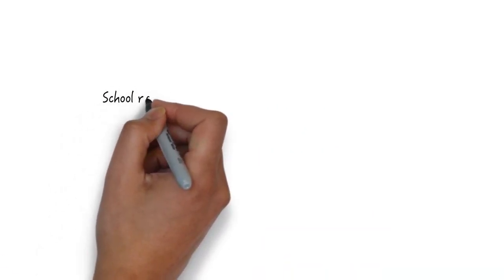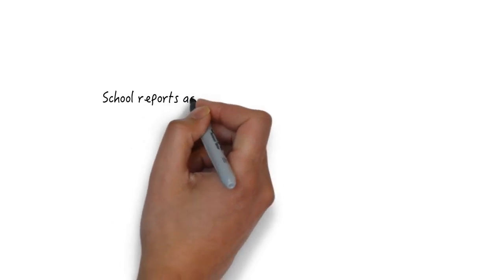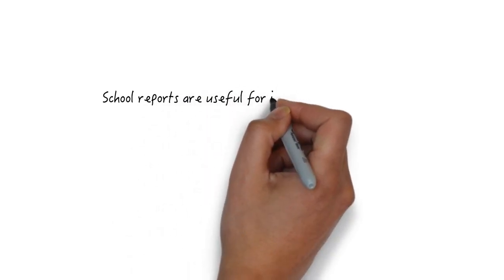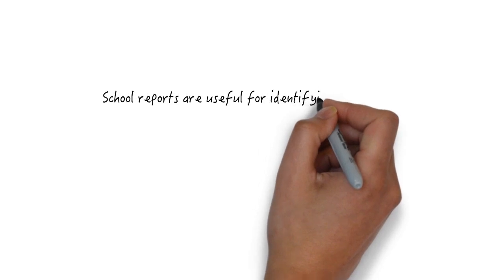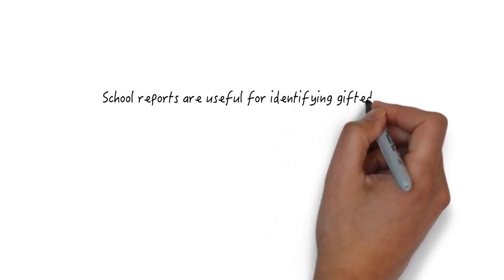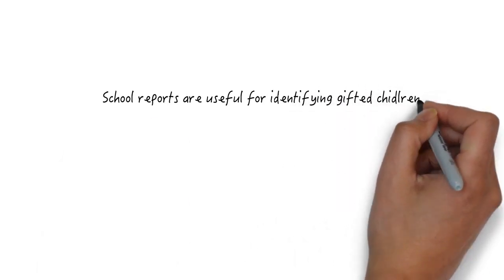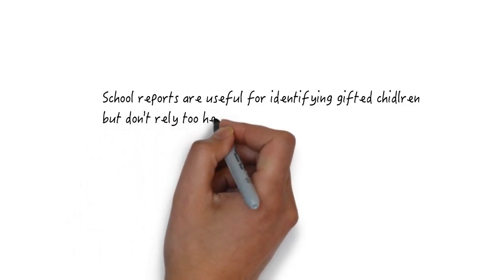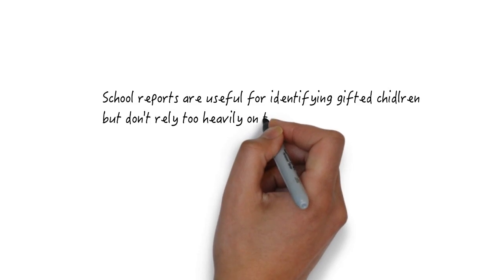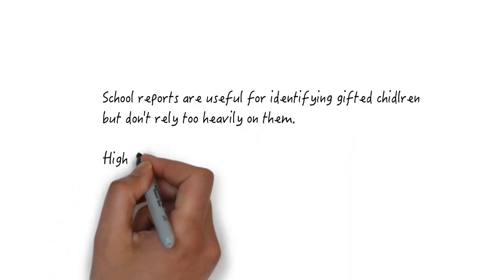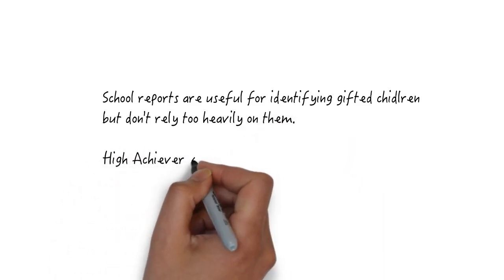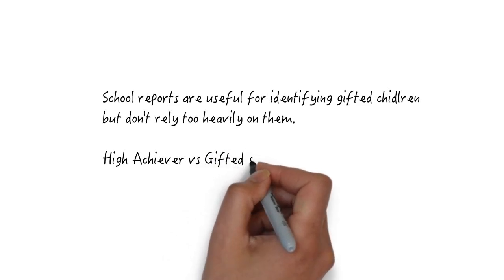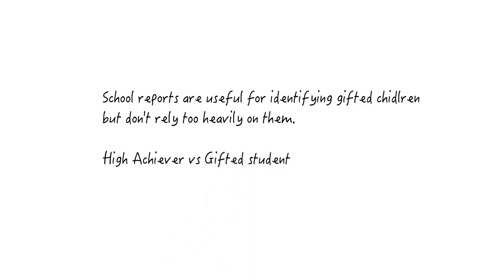In the absence of IQ tests and observational data, some schools have relied on school examination data to identify gifted children. While this can be useful in identifying gifted children, it's important that it's not relied on too heavily. Some gifted children, in particular those who are twice exceptional, may perform poorly on written tests. In addition, it's the high achievers rather than the gifted who are more likely to perform well in school tests. Consequently, teachers and parent observation is an important tool in accurately identifying gifted children.